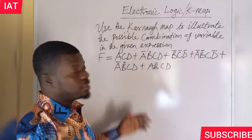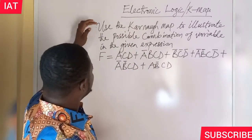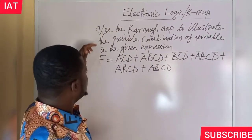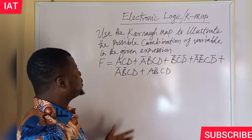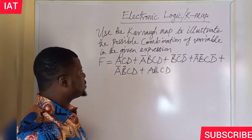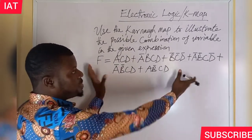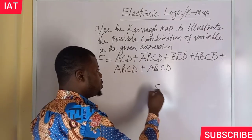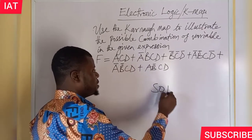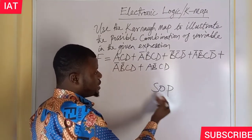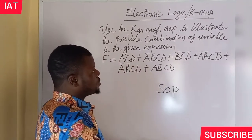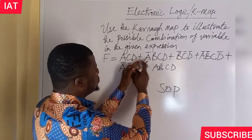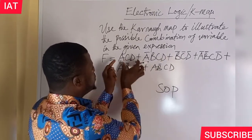We have a problem here. Use the K-map to illustrate the possible combination of variables in the given expression. This is the expression. This is what we call non-SOP. What is SOP? Sum of products.